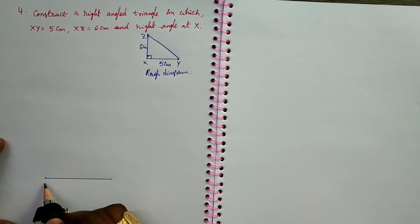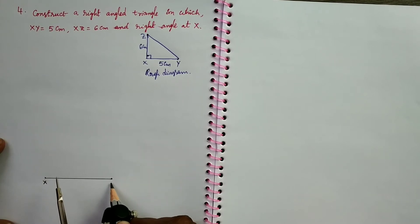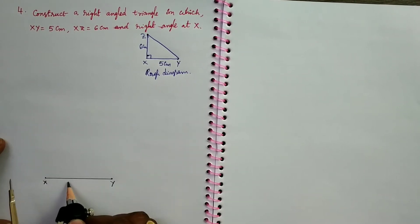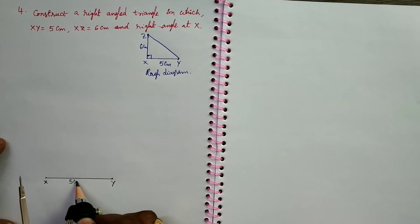Take this point as X and this point as Y. The distance between two points is 5 cm.